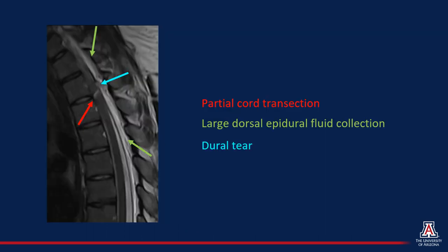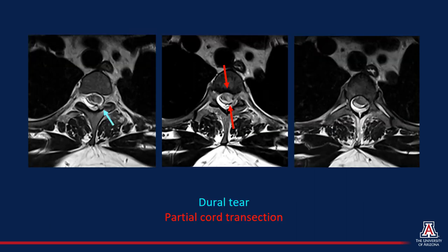These findings are also demonstrated on the T2-weighted images. Again, here we have a partial cord transection visualized with the red arrow, a large dorsal epidural fluid collection with the green arrow, and here we can see a dural tear with the blue arrow. The T2-axial images again show the blue arrow pointing out the dural tear and red arrows pointing out a left hemicord transection.